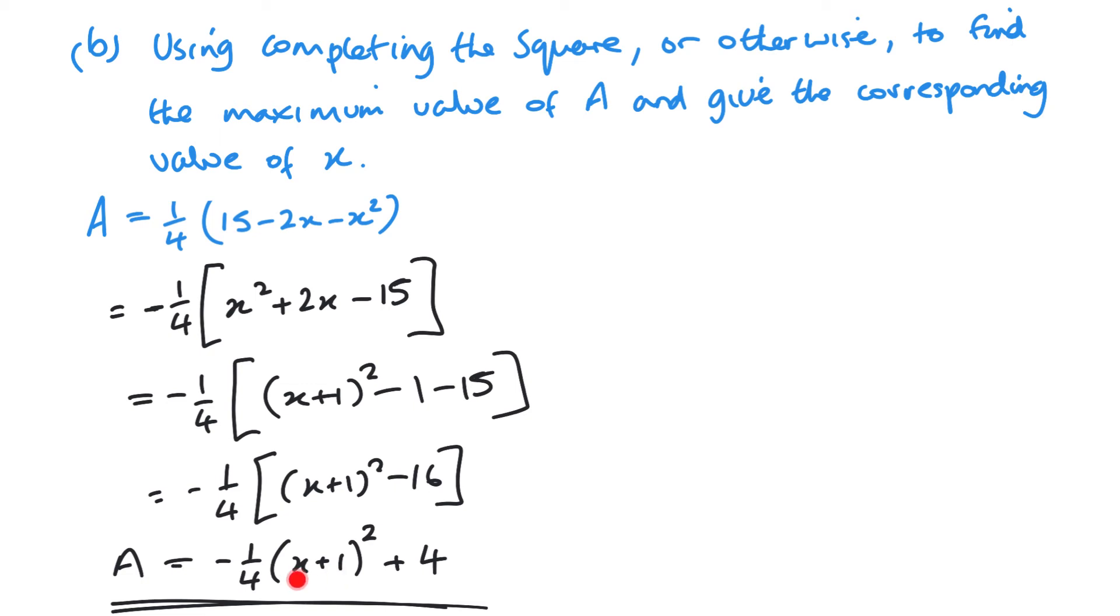Now, that is another way of obviously writing down my expression for the area. Inside this bracket, it doesn't matter what happens here. Because it's squared, it's always going to be positive. So this bracket is always going to be positive. Negative times a positive is going to be negative.